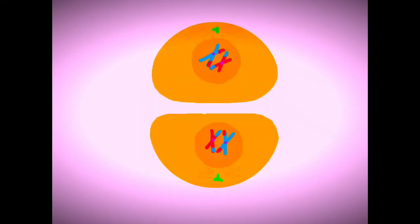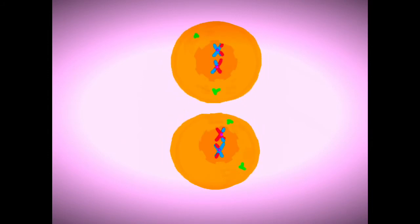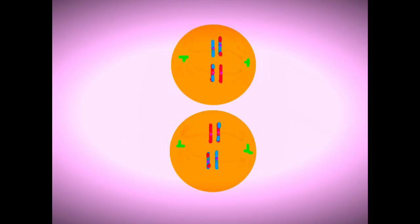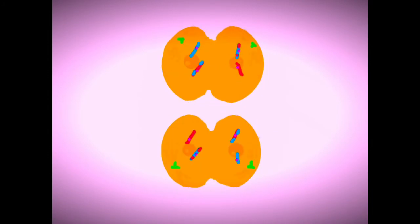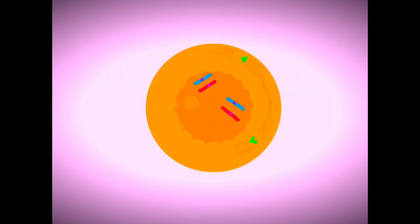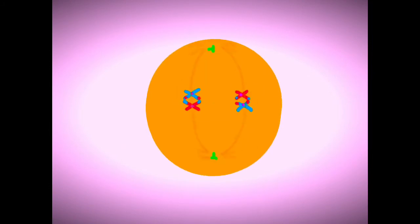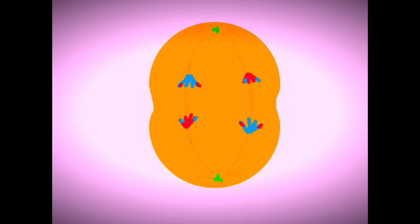In late anaphase I, the chromatids have also reached the spindle poles. The cell membrane begins to constrict. In telophase I, nuclear membranes enclose the separated chromatids. The cell membrane completes its constriction. The first meiotic division ends.